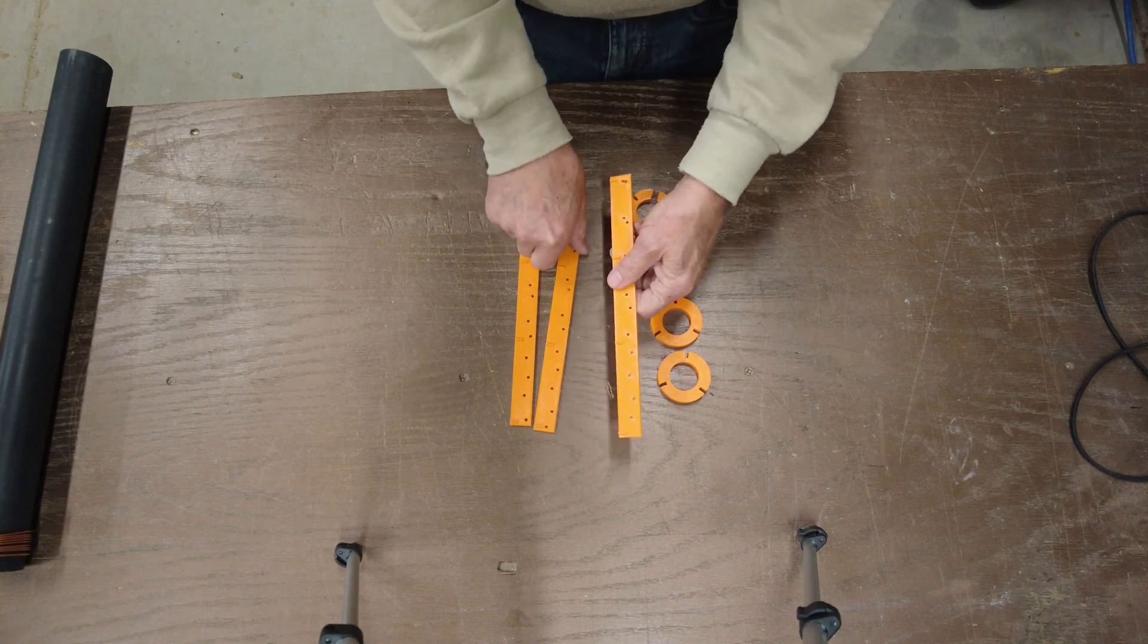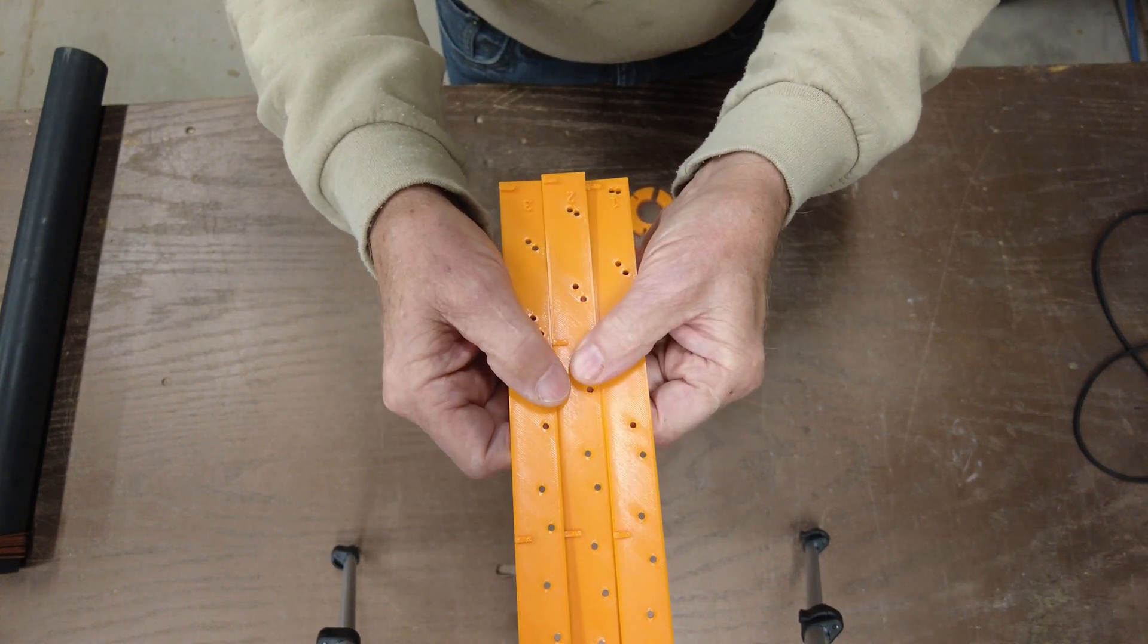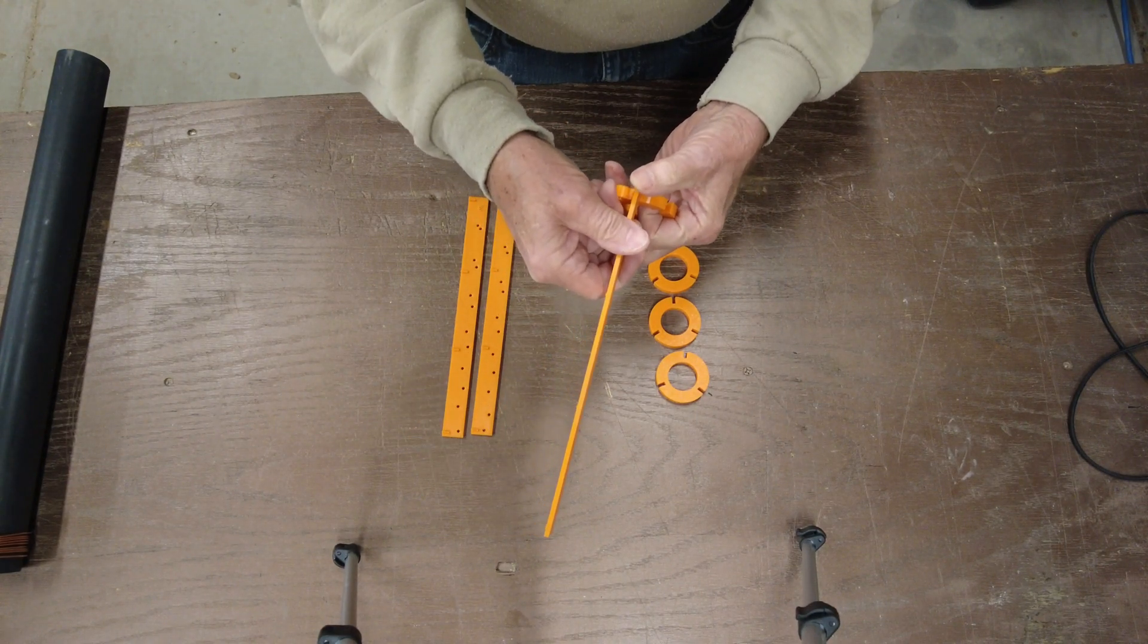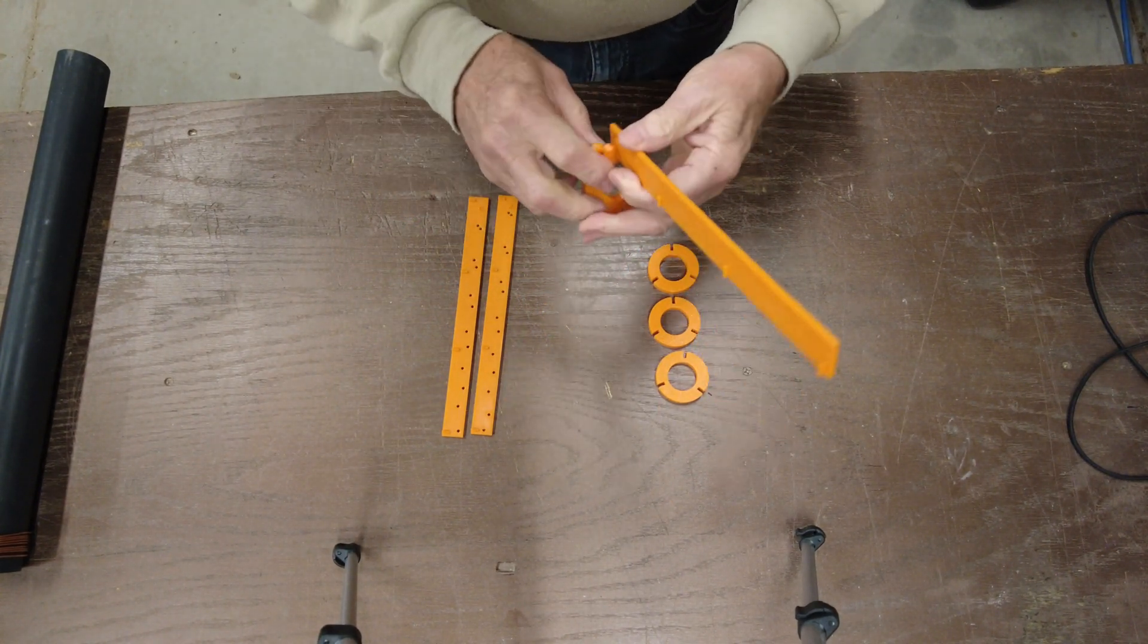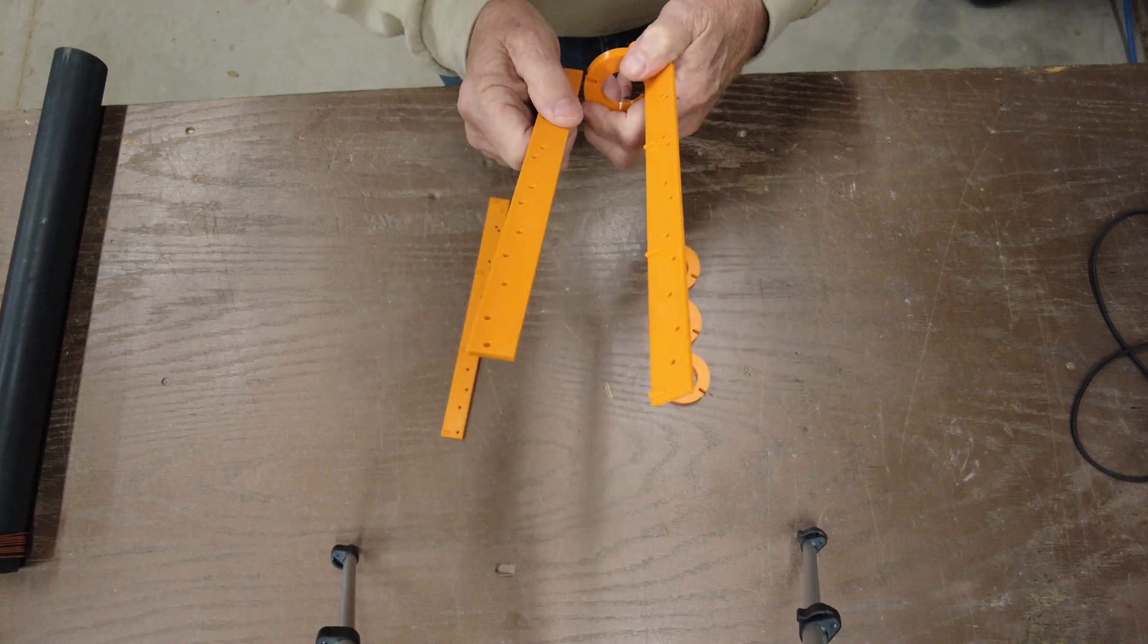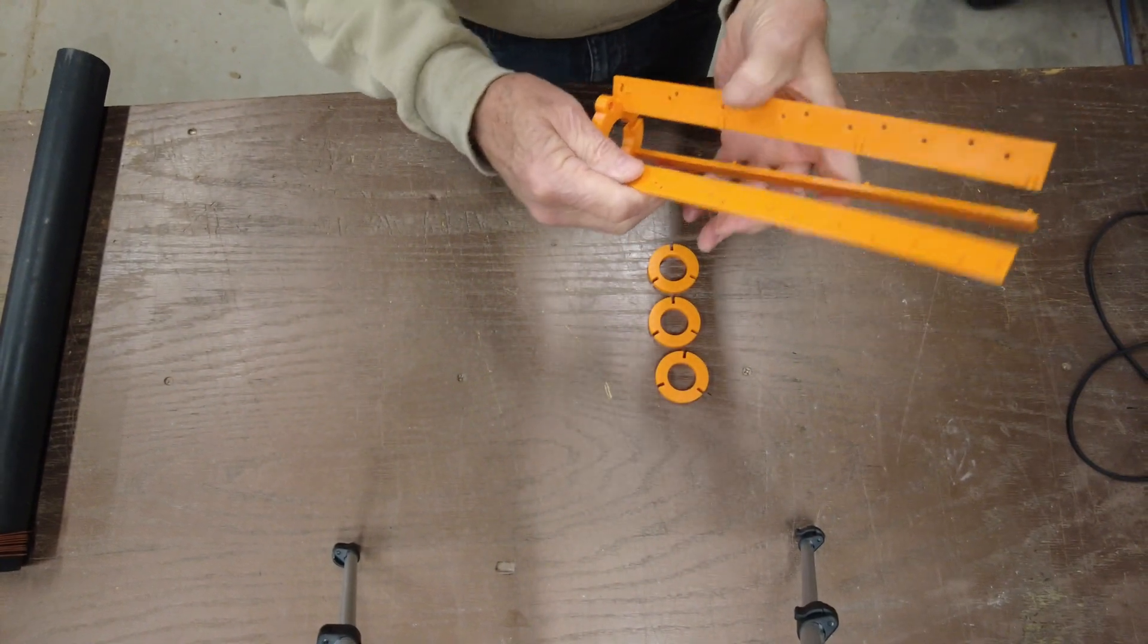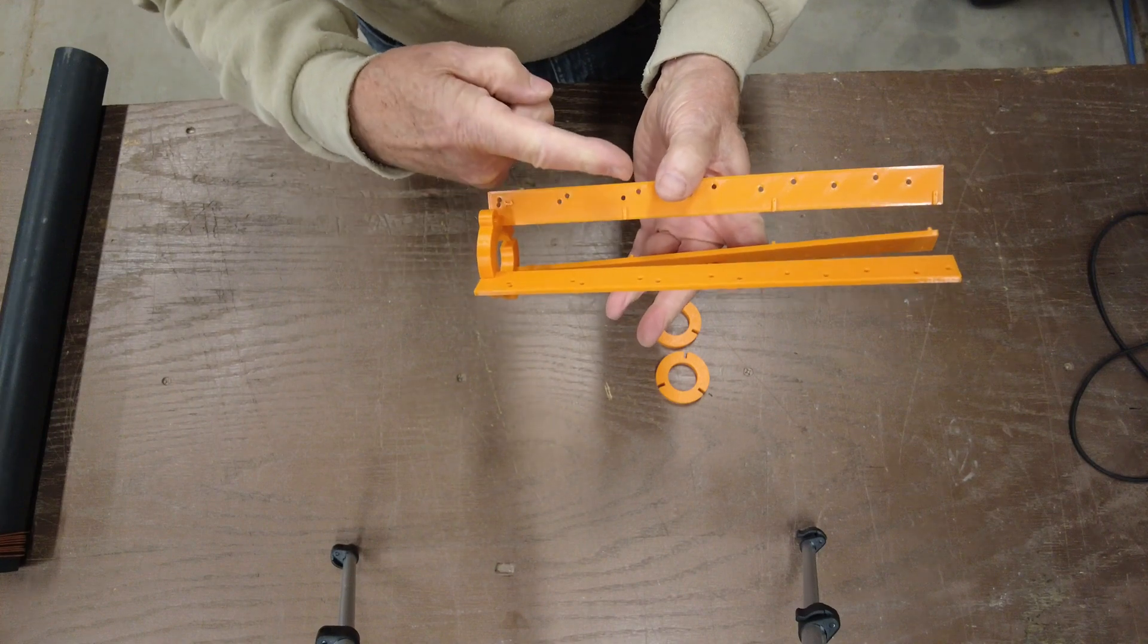If I put them in this way with number one being here, number two going back here, and number three over here, that will be right hand circular polarization. The wire will wrap around this way.